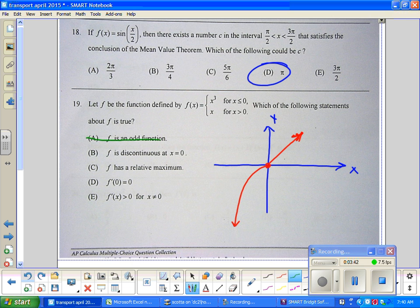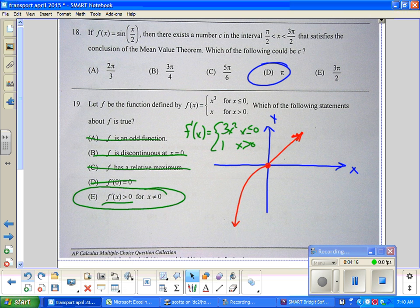f is discontinuous at 0 - no, it's continuous. f has a relative max - I don't see any relative max, it goes on forever. f'(0) equals 0 - okay, so you could do the derivative, and I see that f'(x) equals 3x² and 1. So this is not differentiable, they're not the same. f'(x) is greater than 0 for all x - is this function increasing all the time? We look at it, yeah, it increases. So the answer is E.